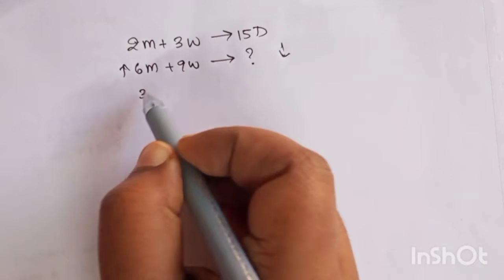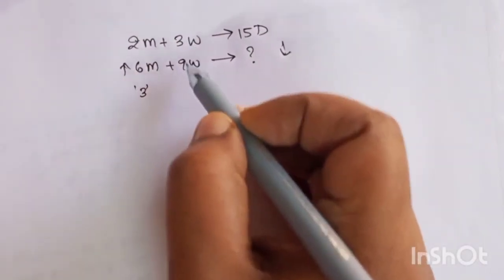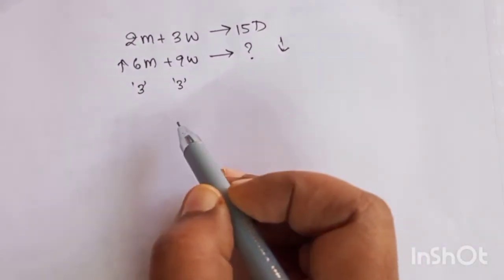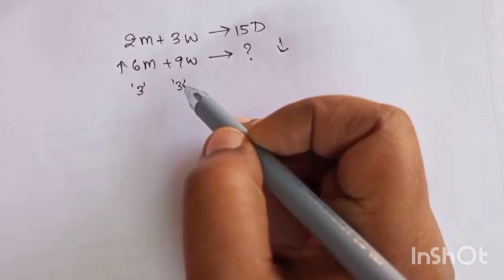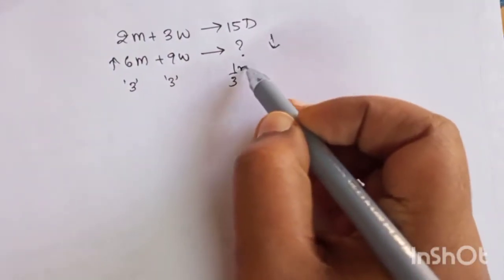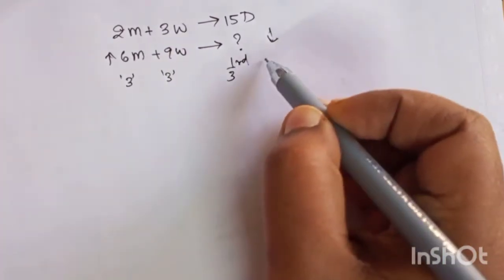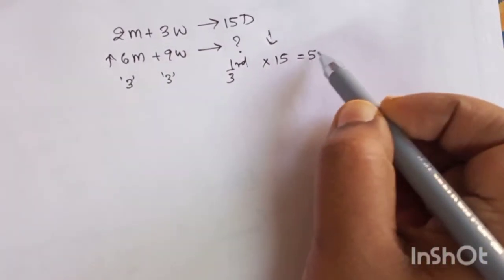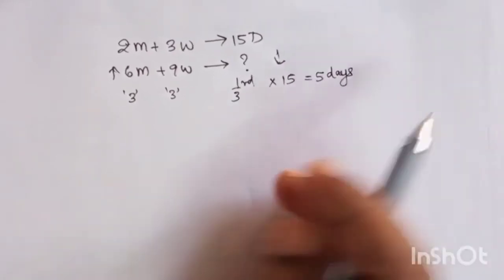Two has become six, so it has increased three times. Three has become nine, this is also increased three times. So if the people have increased three times, then number of days will become one third of it. So days will be 1 by 3 into 15, so they will do the work in five days.